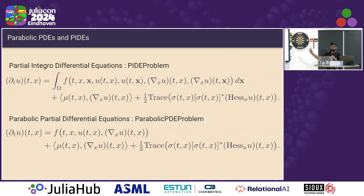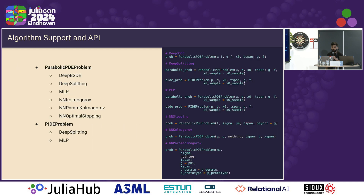These are the two kinds of PDEs that HIDEM PDE solvers aim to solve. The difference between the two is the first term. In PIDEs, the first term is integrated over x, while in the parabolic PDE problem, the first term is just a nonlinear function. All solvers in HIDEM PDE solve parabolic PDE problems, but only deep splitting and MLP are for the PIDE problem.